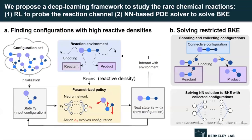We developed a deep learning framework to study the rare chemical reaction to tackle these two challenges. Our framework contains two parts: the first part is to use reinforcement learning to find the reaction channels, and the second part is to use the neural network-based PDE solver to solve the backward Kolmogorov equation.